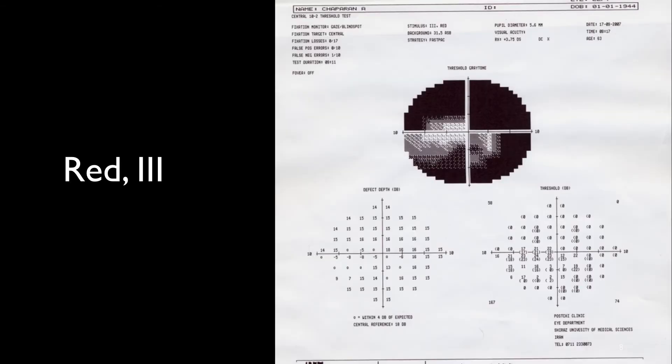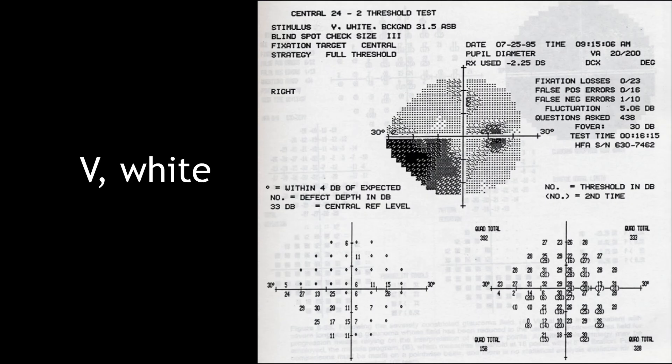There is no database for a red stimulus — even if we choose target size three, we will get a three-in-one printout. The same will happen if we choose stimulus size five even if the color is white, because there is no database for size five, and we get a three-in-one printout.